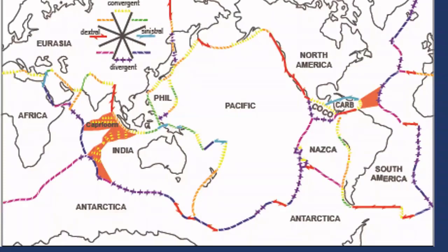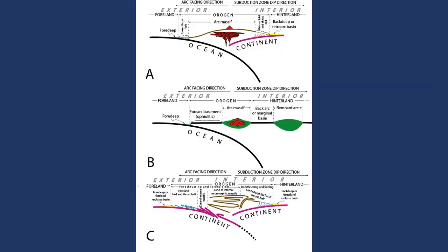These are the plate boundaries in the world. And you can see that very few of them are head on like this one. Most of them have a tangential component — most of them have what we call strike-slip components, and they complicate the structure.